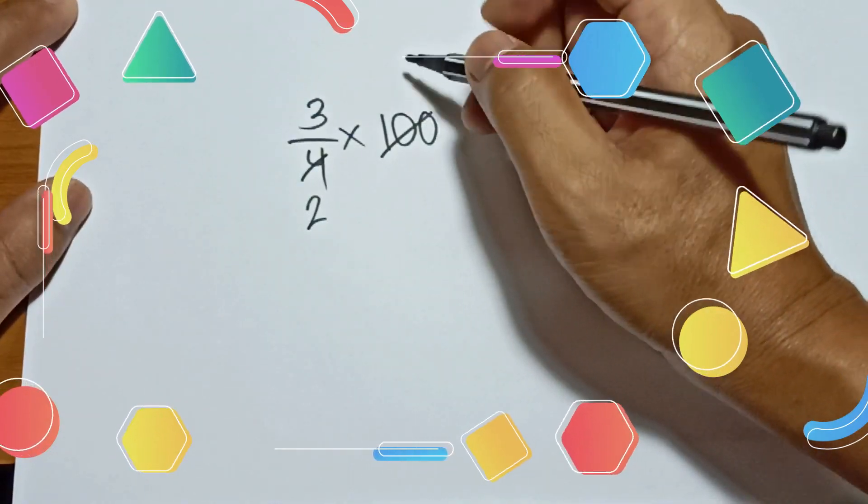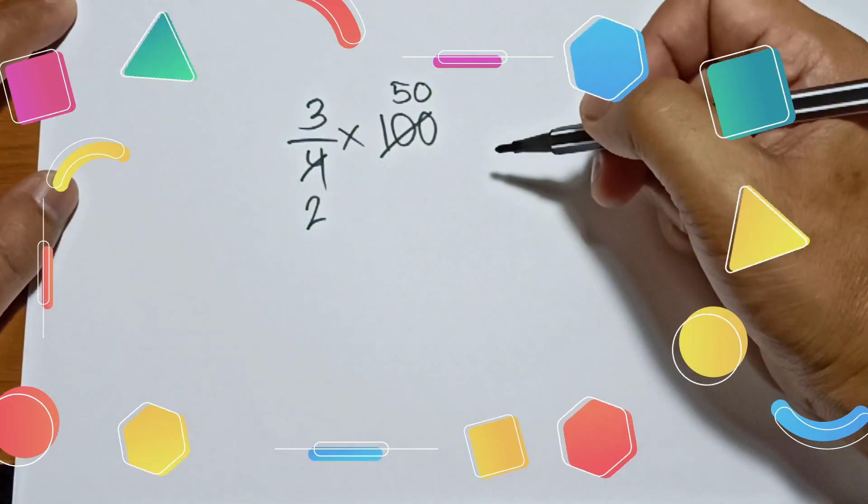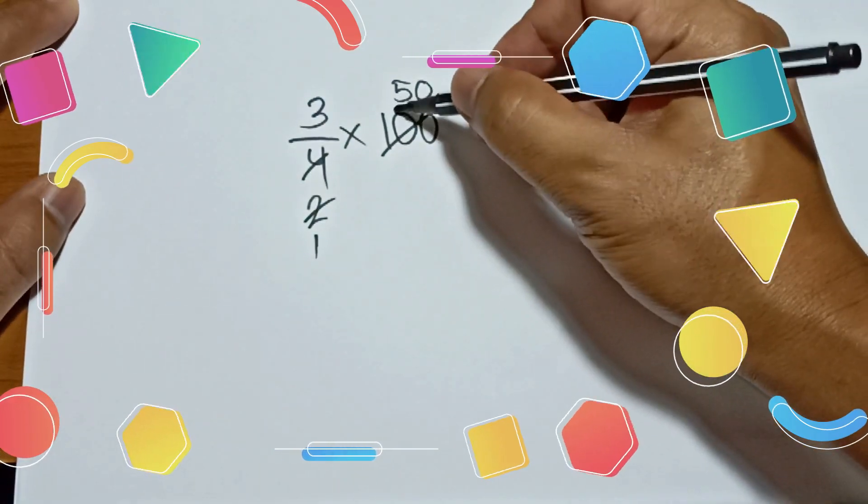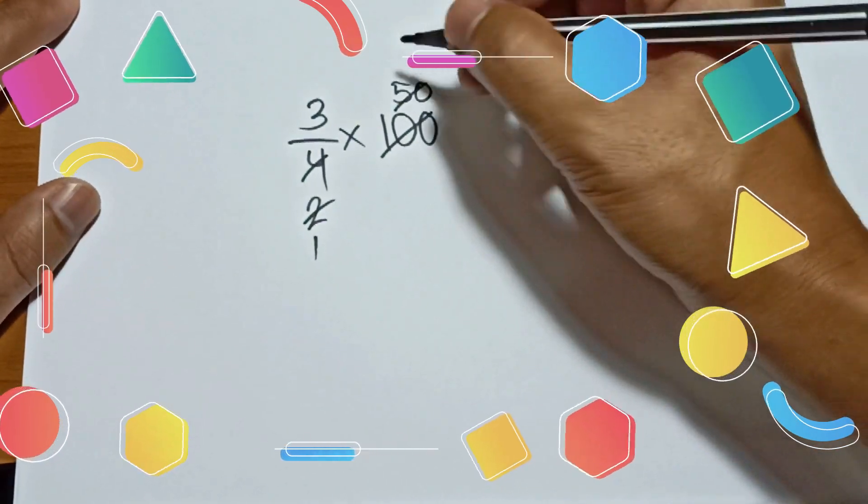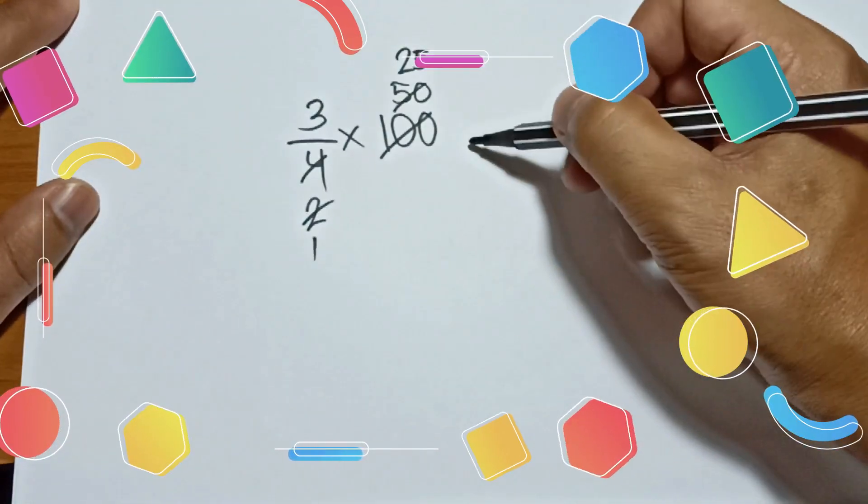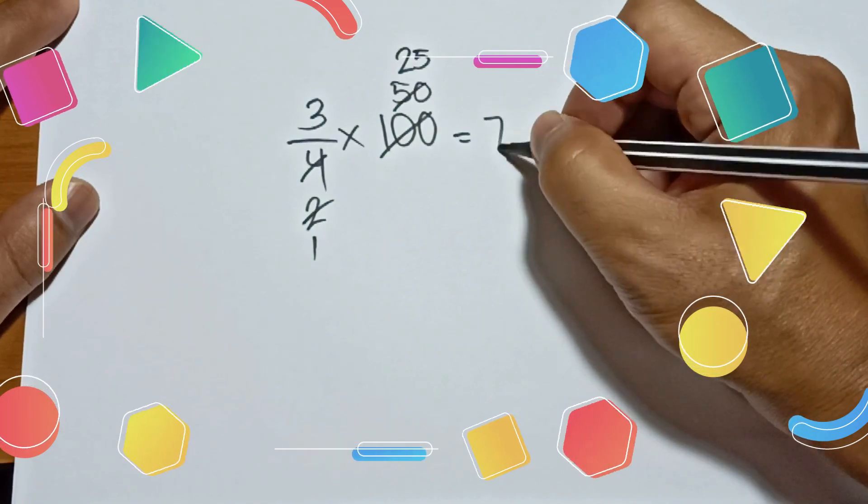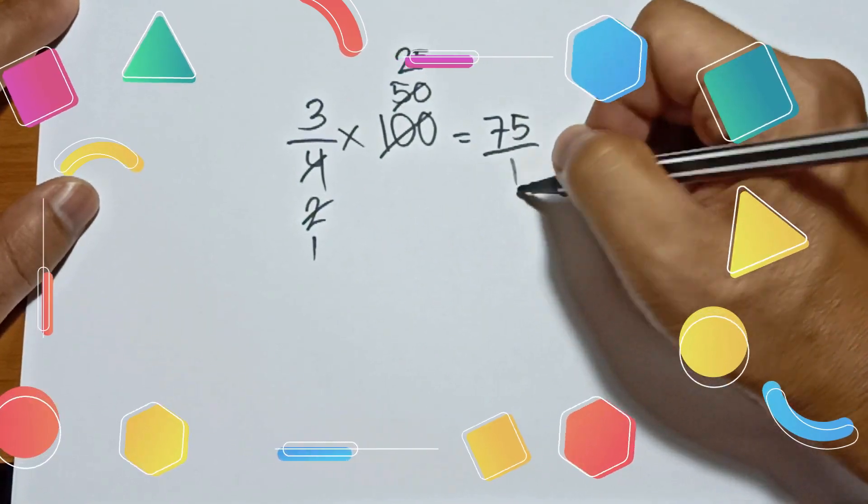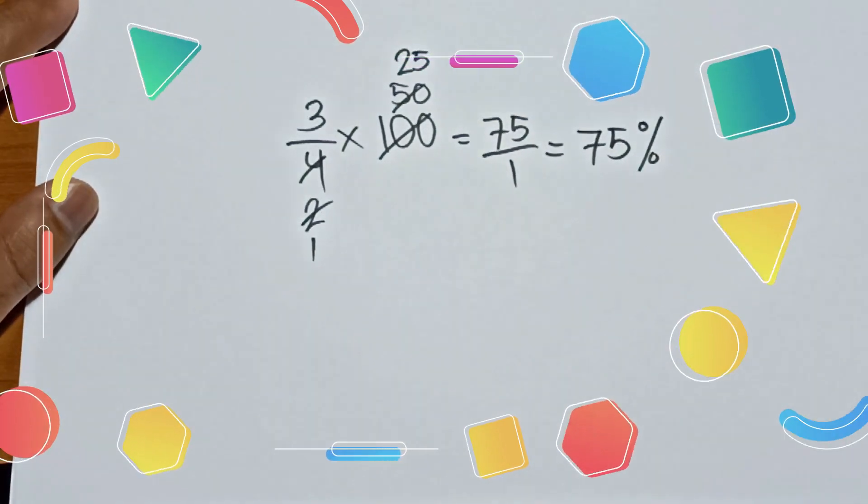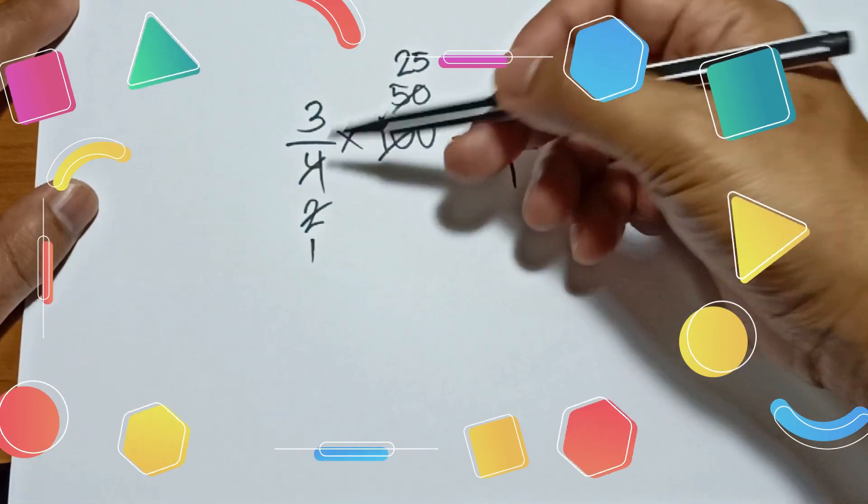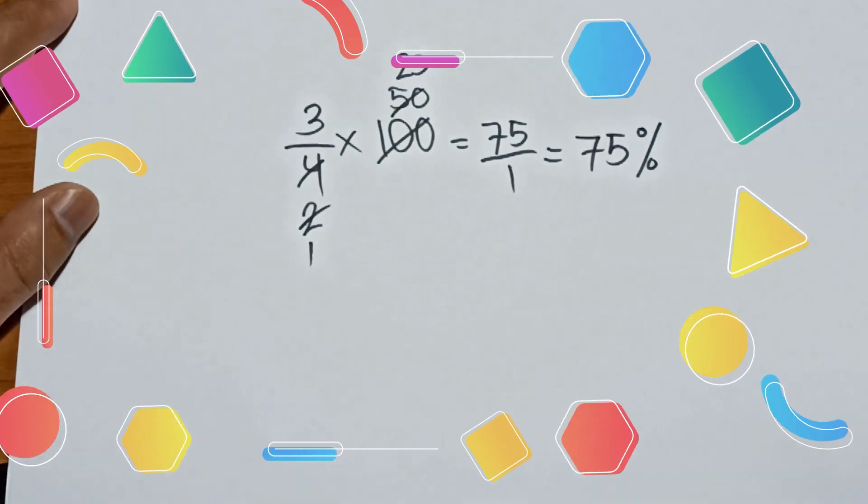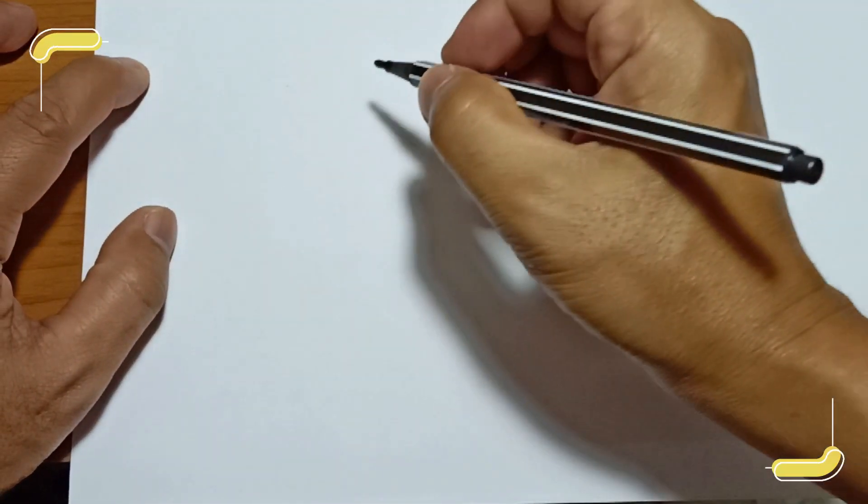And 50 is divisible by 2, which is 25. All you have to do is 3 times 25, which is 75 over 1, or that is equal to 75 percent. Therefore, 3 over 4 is equal to 75 percent.